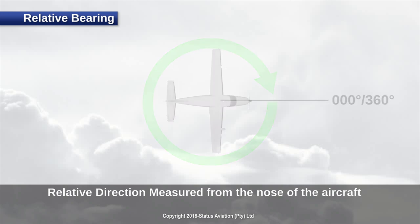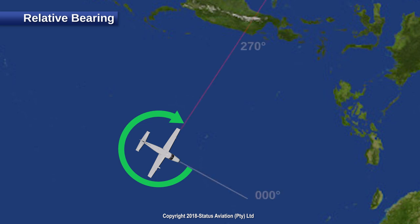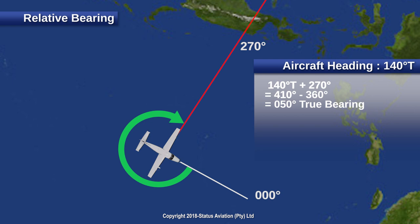Let us consider an example. Here we have an aircraft with an island located exactly to the west. Remember that relative bearing is always measured clockwise from the nose of the aircraft. Therefore, this island has a relative bearing of 270 degrees from the aircraft. Let us say our aircraft is heading 140 degrees true heading. We can then add the relative bearing to the true heading: 140 plus 270 gives us an answer of 410. Since there are only 360 degrees in a circle, we must subtract 360 from 410 to get a true bearing of 050 degrees.